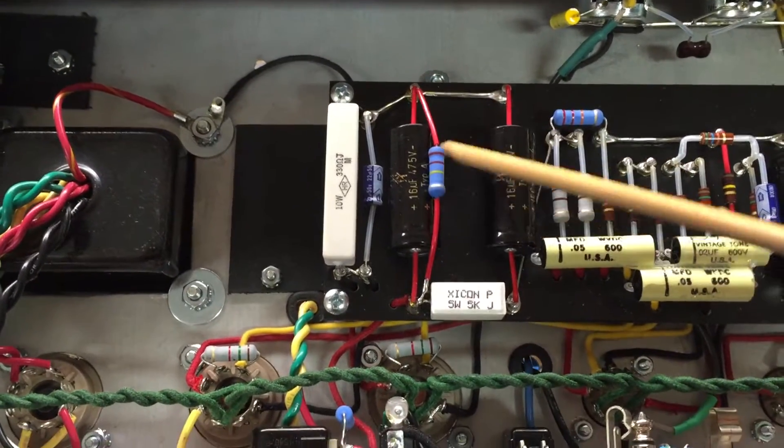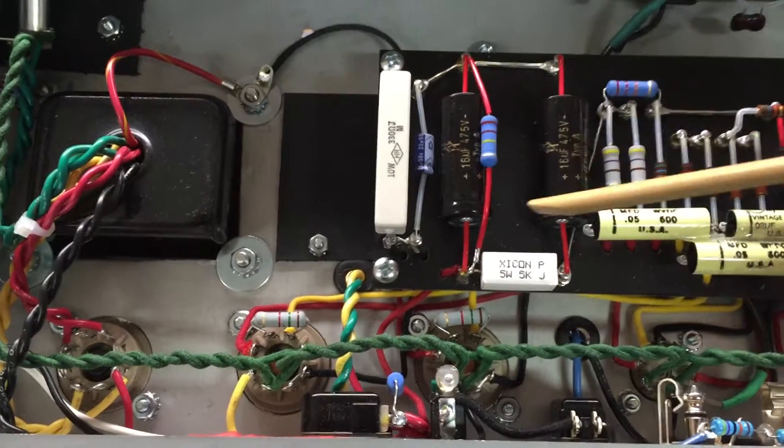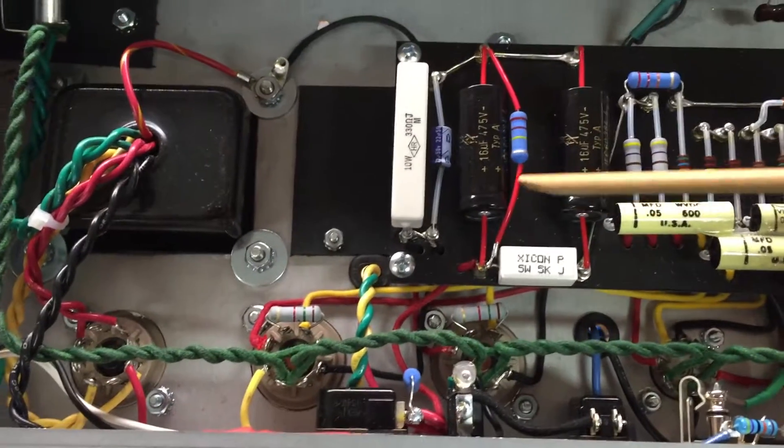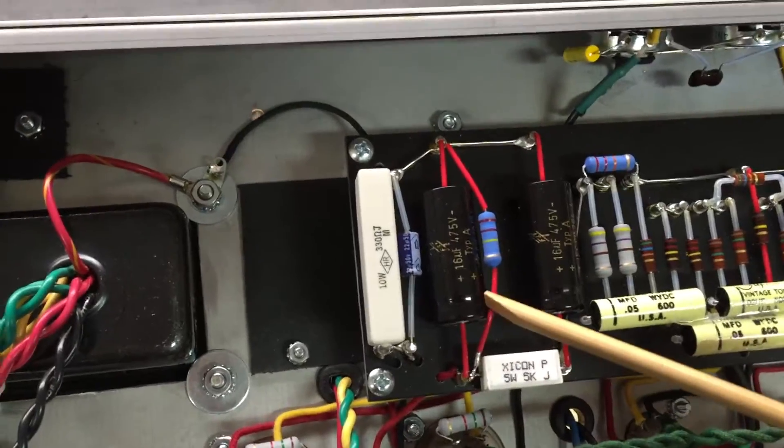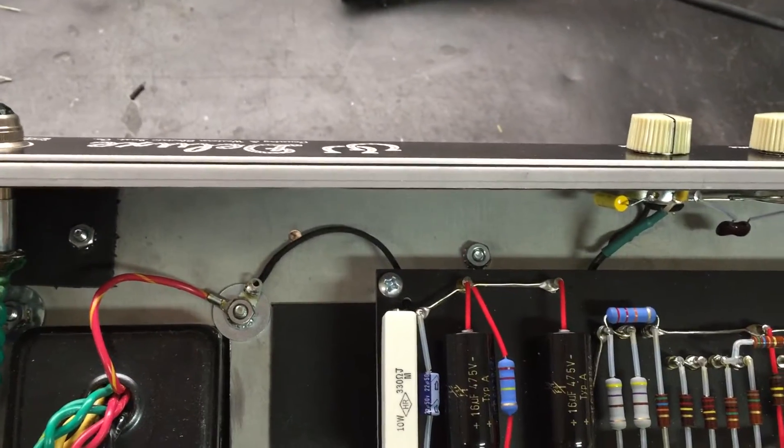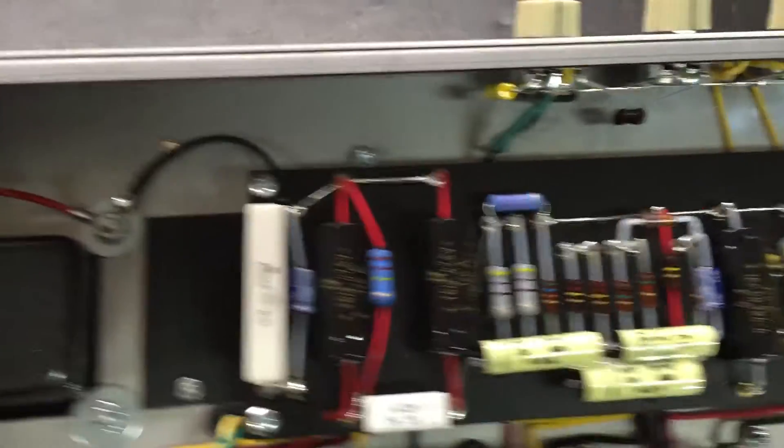But when the amp's on, this is basically not in effect. So most Fender amps have bleeders in them, except Deluxes and Deluxe Reverbs and things like that. So I went ahead and put one in there just as a little safety precaution in case you get inside this guy.